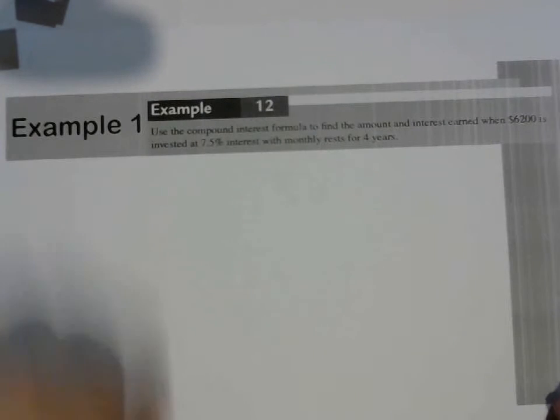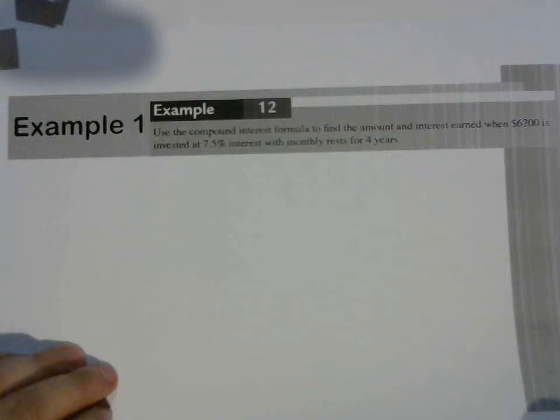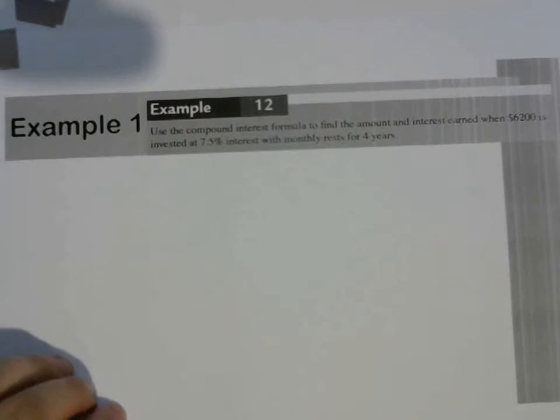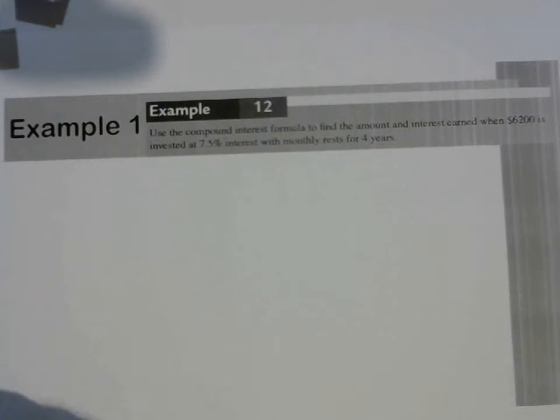Okay, so here's the question. Use the compound interest formula to find the amount and interest earned when $62,000 is invested at 7.5% interest with monthly rests for 4 years.